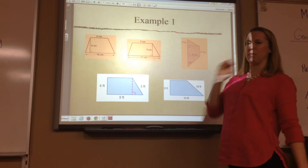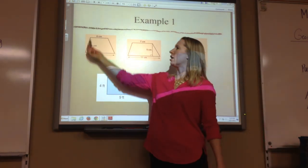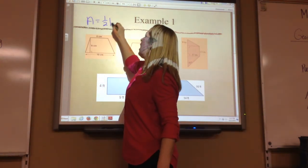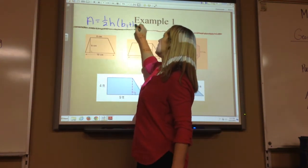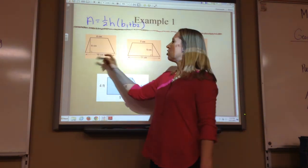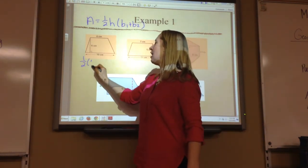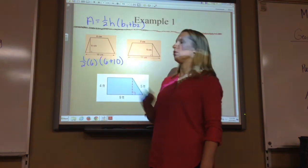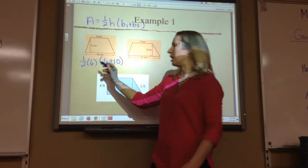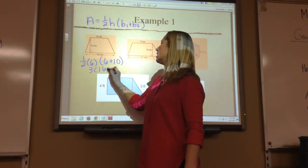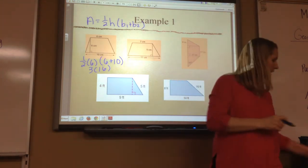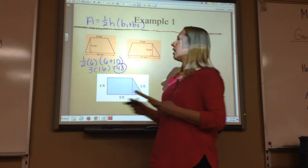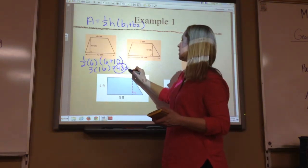Alright, let's try some examples. This one's nice — I already have the height and I have the two bases. Area of a trapezoid is half the height times base 1 plus base 2. Half of six is three, so three times sixteen, because six plus ten is sixteen. Three times sixteen is forty-eight. So that area is forty-eight centimeters squared.